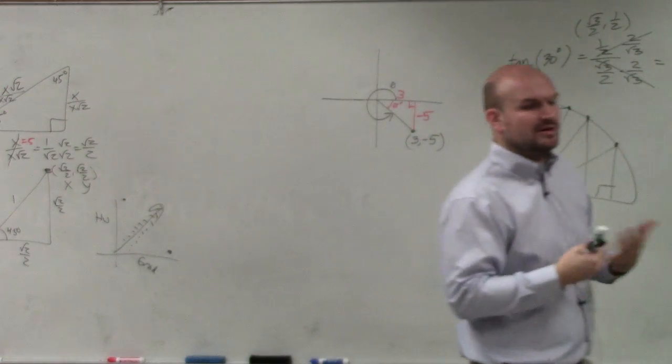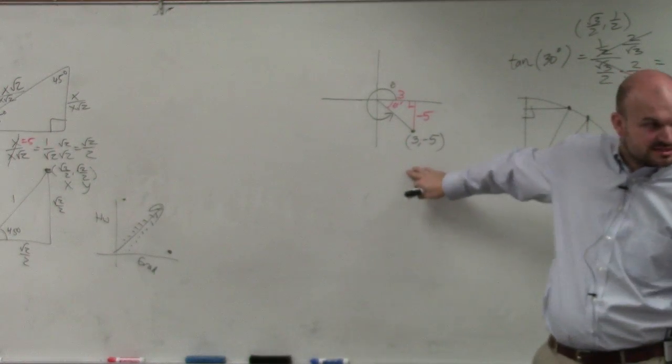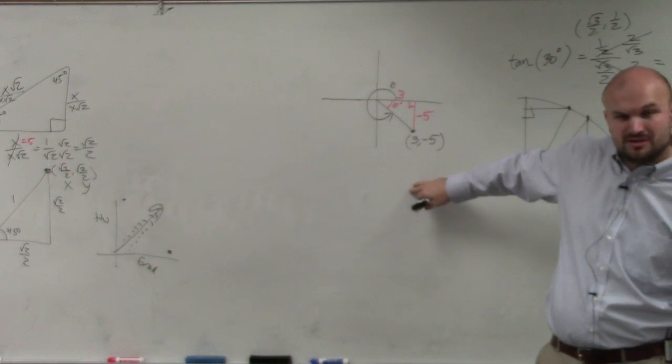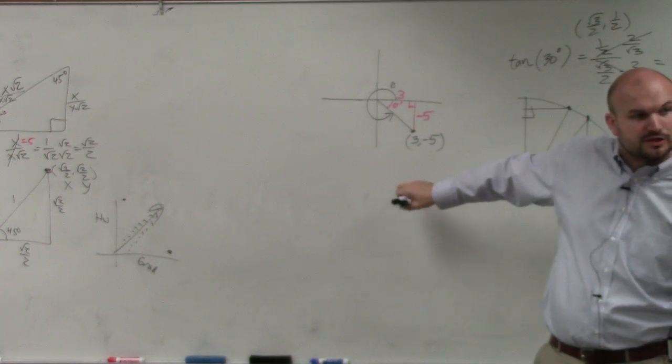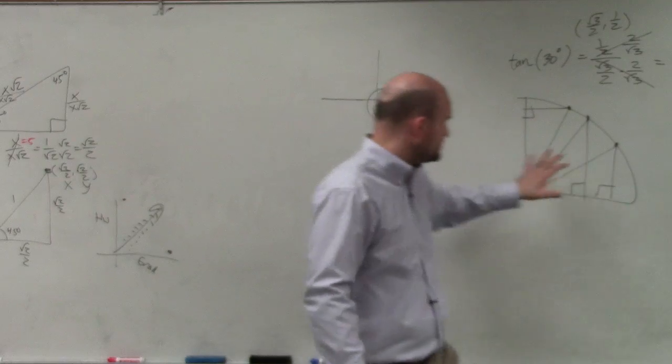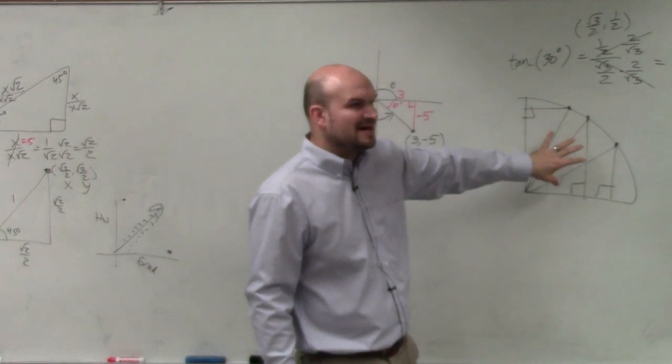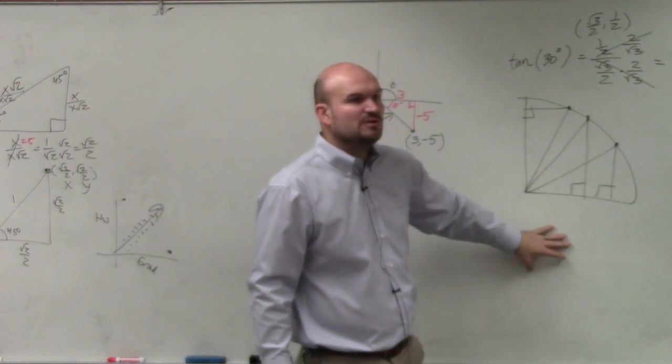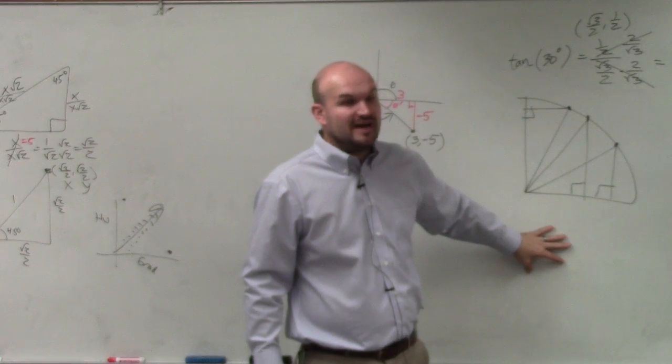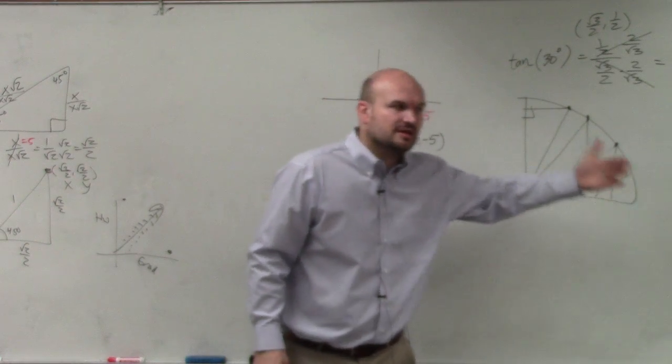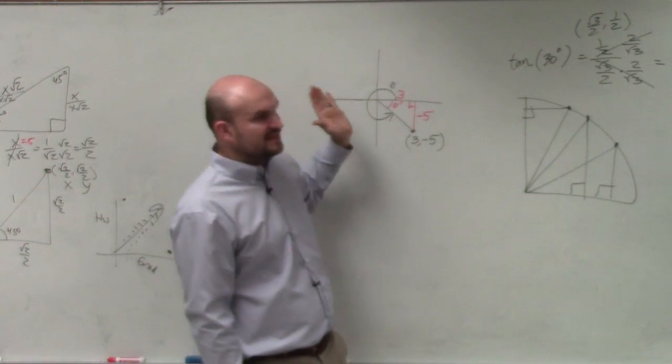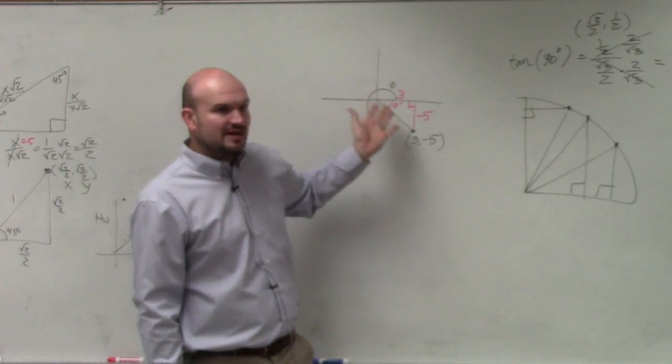The important thing about this, guys, is I want you to understand this. We're using a coordinate system. We haven't used a coordinate system before. Well, actually, we kind of did with the unit circle. Here, it's all positive. But once I start going below the x-axis, values are negative. When you go to the left of the y-axis, values are negative.